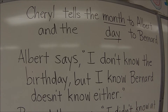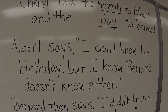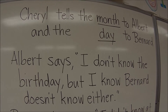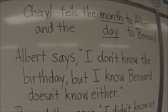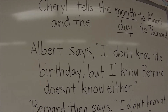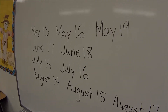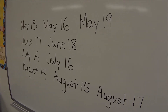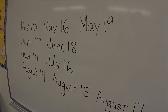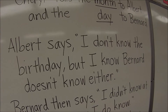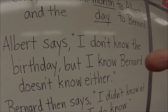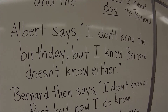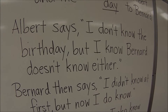So Albert says: I don't know the birthday, but I know Bernard doesn't know either. Again, Cheryl tells the month to Albert and the day to Bernard. And from that, Albert says, well, I don't know the birthday. So we can come over here and look and see that Albert wouldn't know the birthday — it could be May, June, July, or August. How is Albert supposed to know the birthday by just getting the month? But take a look at this clue. This clue is huge. He says, but I know Bernard doesn't know either. That's a huge clue because it's going to help us eliminate some of these dates.